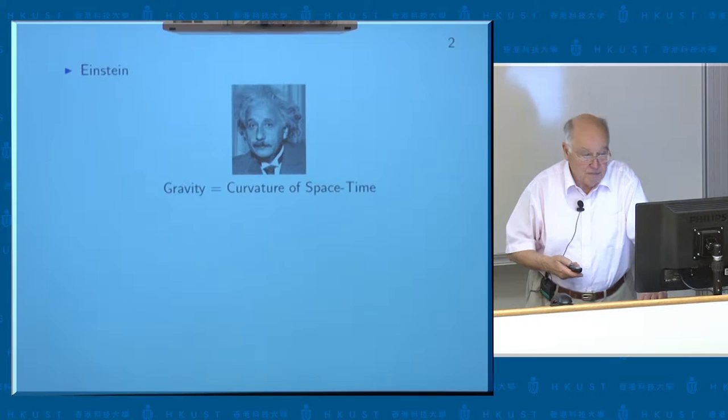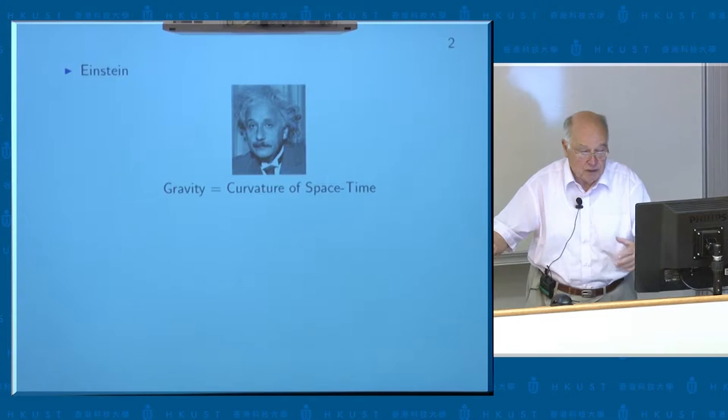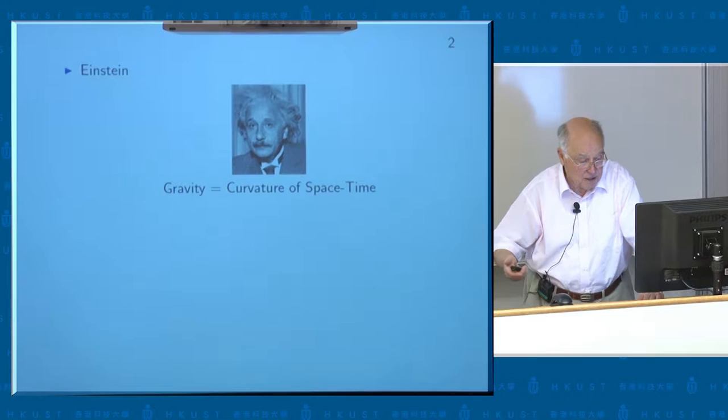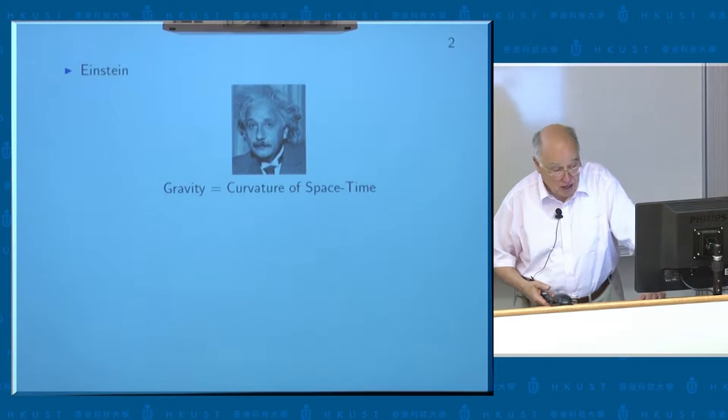This theory is about the curvature of space and gravity. In the equations for the Einstein theory, there's a left-hand side which is the curvature, and the right-hand side in the vacuum is zero. But when you have matter, the right-hand side contributes a term called the energy-momentum tensor. And Einstein always said the left-hand side was beautiful, but the right-hand side was junk, and he didn't like it.